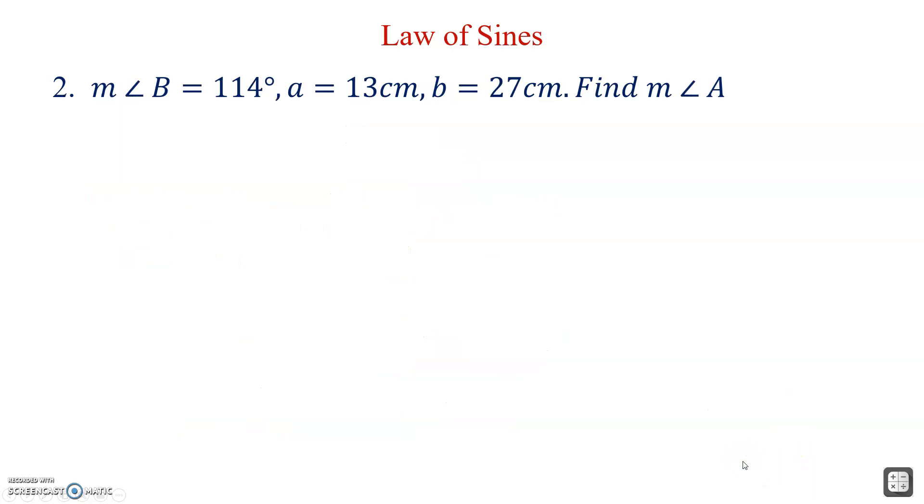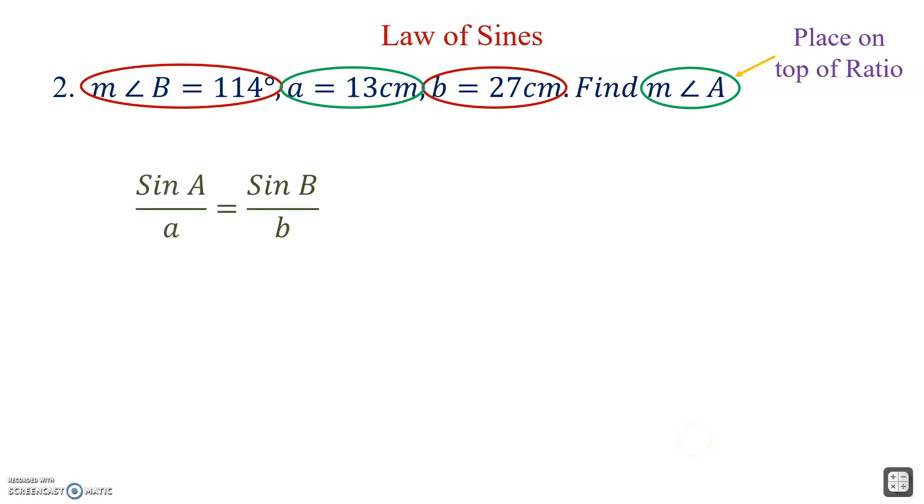Next problem. The first thing we notice, there's no illustration, so we have to go purely off of the letters that they use. They gave us angle B, so big B and lowercase b, we got our first ratio and lowercase a and uppercase A. We have all the ratios we need to continue with the law of sines. Because we're trying to find the measure of angle A, that will go on top of the ratios. We've got sine A over a equals sine B over b. Let's substitute all the values in. We now have a proportion. We'll cross multiply.